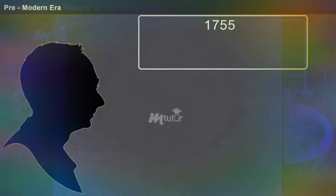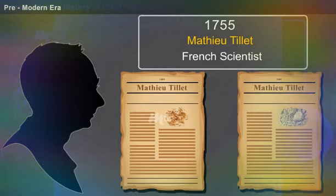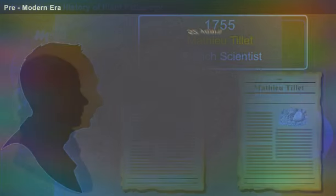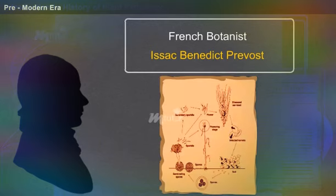In 1755, Matthew Tillet, a French scientist, published a paper on bunt or stinking smut of wheat and suggested that the disease incidence can be reduced by rubbing the seeds with salt and lime before sowing. After 52 years, a critical step was taken by French botanist Isaac Benedict Prevost in studying the life cycle of bunt fungus in wheat.